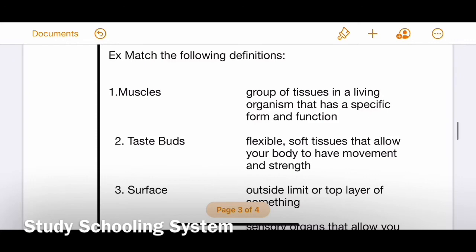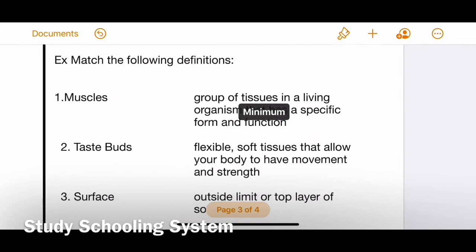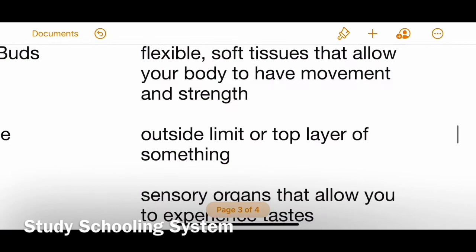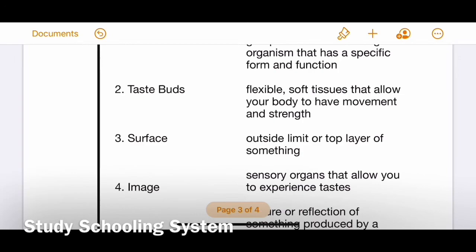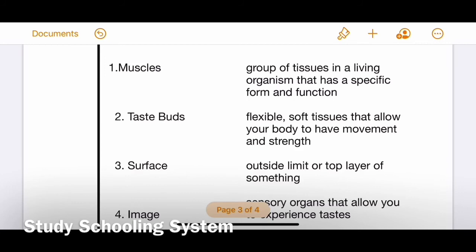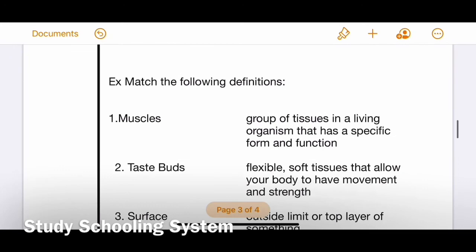The second one is 'flexible soft tissues that allow your body to have movement and strength.' This is muscles. 'Outside limit or top layer of something,' very easy, number three: surface. 'Sensory organs that allow you to experience taste,' very easy, number two: taste buds. 'Picture or reflection of something produced by a device,' the last one left is image. These are all the definitions and you will match them.